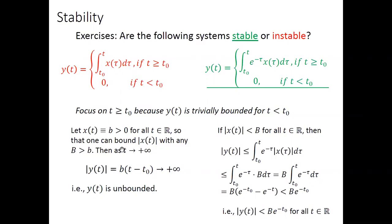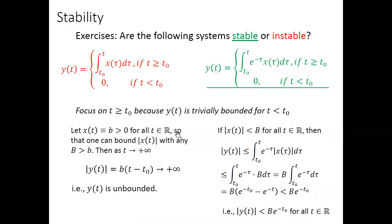For the system on the left, it is enough to find a counter example where x(t) is bounded but y(t) is not. The counter example is simple: assume x(t) equals some positive constant b. Then x(t) is bounded by any constant B larger than b. But for this bounded input, the output y(t) is the integral of a constant, which for t > t₀ equals b times (t − t₀). This goes to infinity as t goes to infinity, so y(t) is unbounded. Therefore the system on the left is unstable.